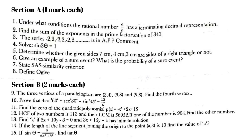Now, under what conditions does a rational number A by B have a terminating decimal representation? Next question: find the sum of the exponents in the prime factorization of 343. Third one: the series 2, -2, 2, 2... — is it in A.P.? Comment. Then solve: sin 3θ = 1.